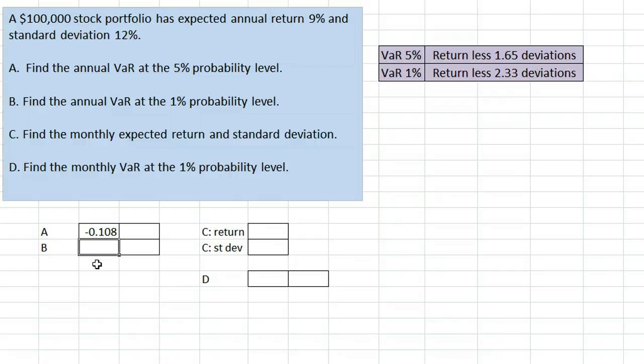5% of the time we should expect our annual return to be worse than negative 10.8%. Convert this to a dollar amount by multiplying by the portfolio value 100,000 to get $10,800. 5% of the time we can expect to lose $10,800 or more in a year.